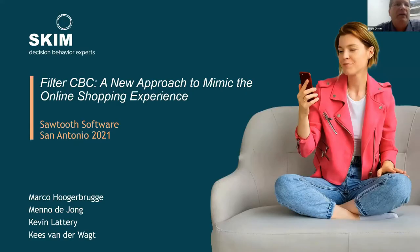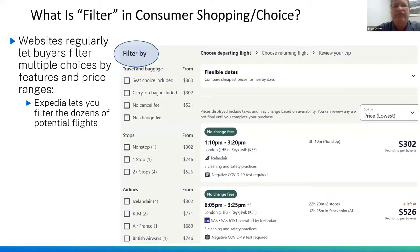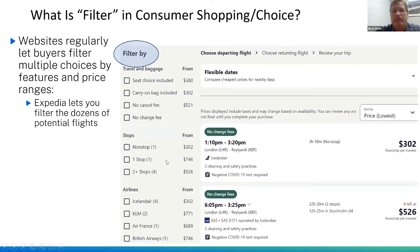The next presentation was delivered by our friends at SKIM in Europe. They talked about something they called filter CBC — a new approach to mimic the online shopping experience. Marco and his colleagues were the presenters. When you go to Expedia and search for flights, you get dozens of options, and Expedia gives you a filter section on the left. After getting all your travel options, you can filter them to make a better choice faster rather than scrolling through everything. This kind of filtering experience is very common in web shopping today.